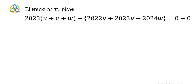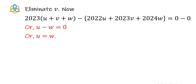Now we eliminate v. Recall that 2023(u + v + w) = 0, and also 2022u + 2023v + 2024w = 0. Subtracting these two expressions, the 2023v terms cancel, giving u − w = 0. Combined with u + v + w = 0, we get u = w.